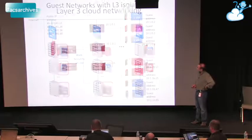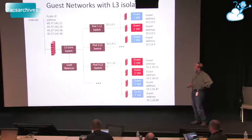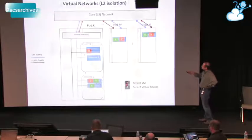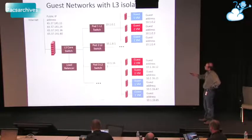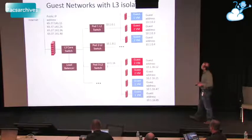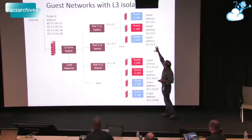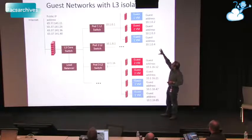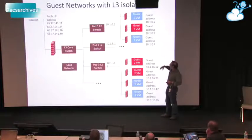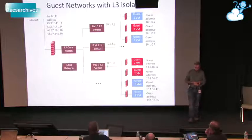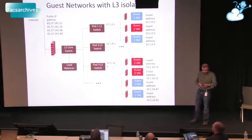Those are the security groups. Just a reiteration of how IP addressing works here: in one pod, you get multiple tenants landing in the same pod with the same range of IP addresses. With the firewall, we have to enforce the security groups.